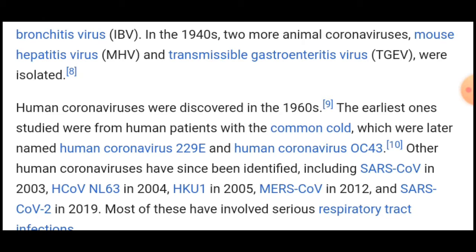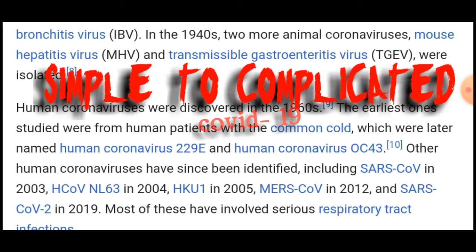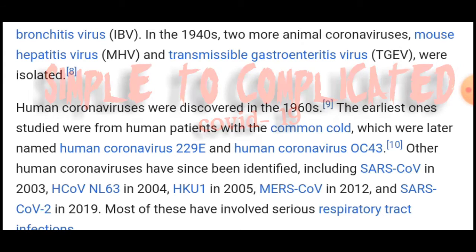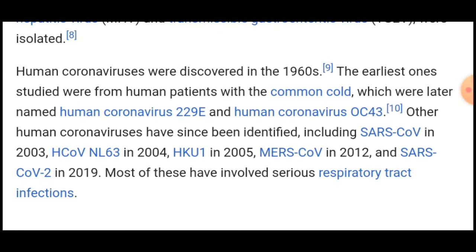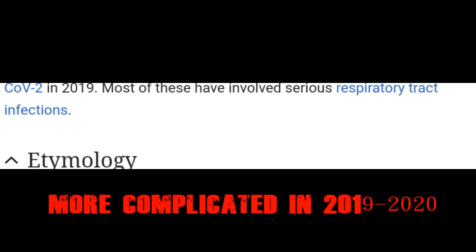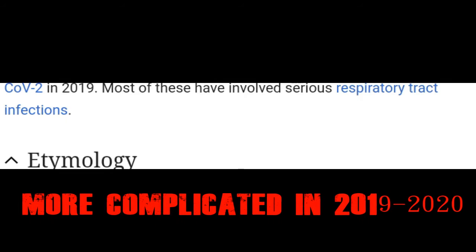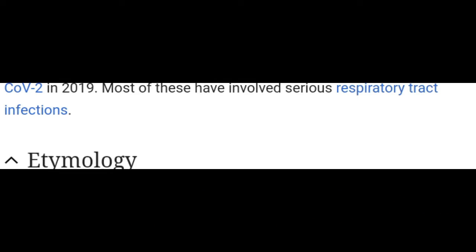The earliest one was studied from a human patient with a common cold, who had an advanced type of respiratory tract disease. This was later named human coronavirus 229E and human coronavirus OC43. Other human coronaviruses have since been identified, including SARS-CoV in 2003, HCoV-NL63 in 2004, HKU1 in 2005, MERS-CoV in 2012, and SARS-CoV-2 in 2019.